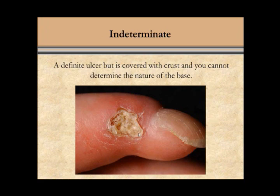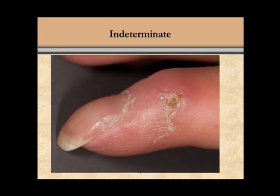It is up to you, if you wish to lift the crust off to see if you can see a base underneath, to do so and then determine if it is in fact active or not. If you do not lift the crust off and cannot see the ulcer base, you cannot determine if this is active — you must call this an indeterminate ulcer. This is another example of a definite ulcer where one cannot see the base because of the crust over it, so this should be called an indeterminate ulcer.